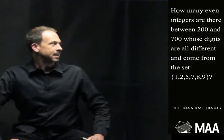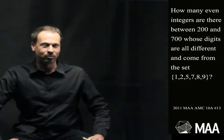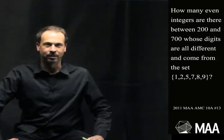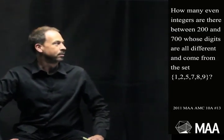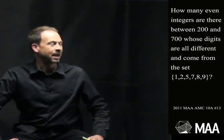How many even integers are there between 200 and 700, whose digits are all different and come from the set 1, 2, 5, 7, 8, 9?